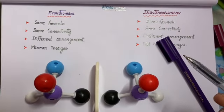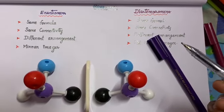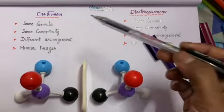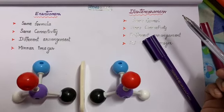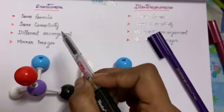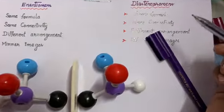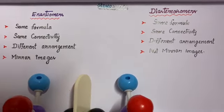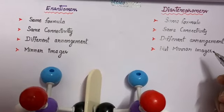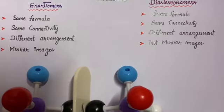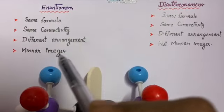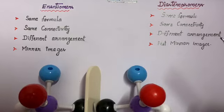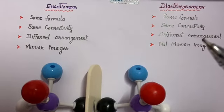Hello students, today in class we are going to discuss about the categories of stereoisomers. There are two kinds of stereoisomers: enantiomers and diastereomers. Both enantiomers and diastereomers have the same molecular formula, similar connectivity, but different arrangements. The only difference is that enantiomers are mirror images of each other, while diastereomers are not mirror images of each other.